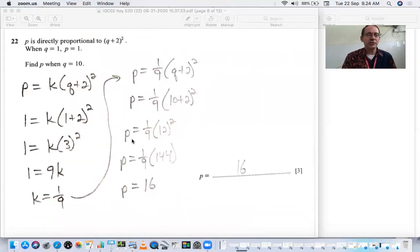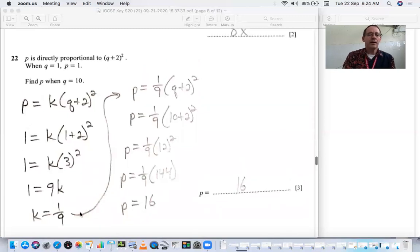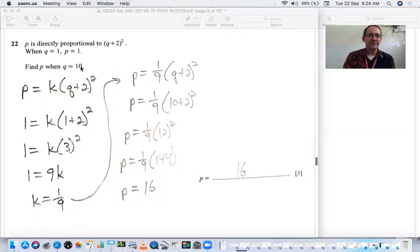Now we move down to this proportional problem. It is directly proportional. So P equals K is our proportionality constant. K directly means to multiply it by what follows, which is Q plus 2 squared. The first set of numbers is so that you can find the K. So 1 and 1. 1 plus 2 is 3. 3 squared is 9. Divide by the 9. K is 1 ninth. Plug that back into your original formula. So now that we have the K, we can plug in our second set of numbers. Q is 10. 10 plus 2 is 12. 12 squared is 144. And 1 ninth of 144 is 16.